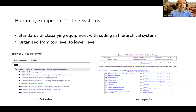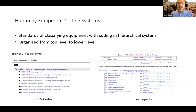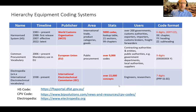Hierarchy equipment coding systems have more structure than simple lists. They are standards for classifying equipment with coding in hierarchical systems organized from a top-level perspective with a specific purpose in mind — but potentially quite useful for organizing maintenance because they're nicely structured. We looked at three of them: the Harmonized System of the World Customs Organization, which is very much in use, and the Common Procurement Vocabulary of the European Union, also very much in use.